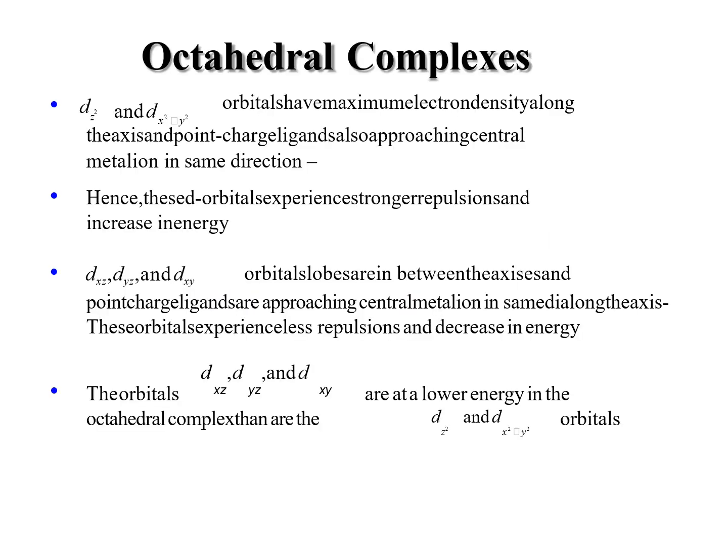In the octahedral complex, the dz² and dx²-y² orbitals have maximum electron density along the axes, and the point charge ligands approach the central metal ion in the same direction. Hence, these orbitals experience stronger repulsion and increase in energy. The dxz, dyz, and dxy orbitals lie between the axes, and the point charge ligands approach along the axes, so these orbitals experience less repulsion and decrease in energy. Therefore, dxz, dyz, and dxy are lower energy orbitals in the octahedral complexes, and dz² and dx²-y² are the higher energy orbitals.